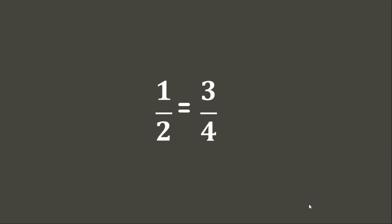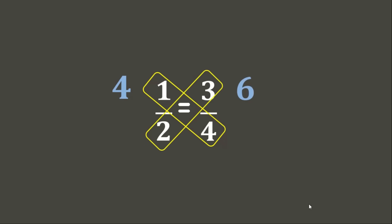Let's have one more example: one is to two equals three is to four. Using the cross-multiplication method, four times one is four, while two times three is six. Since four is not equal to six, these two ratios are not proportional to each other. Great job!